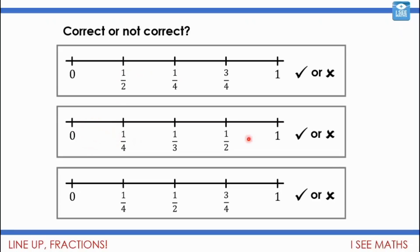Now here the fractions are in the right order — it does go a quarter, then a third, then a half. But this one's incorrect, because can you see that the half is not in the middle — it's not halfway. So actually all the fractions should be further to the left, and this is actually where a half is, because a half is right in the middle. Whereas this one is correct — we've got a half in the middle, a quarter is one quarter of the way along, and three quarters is three quarters of the way along.